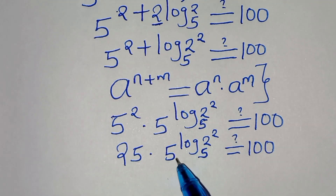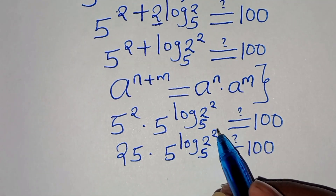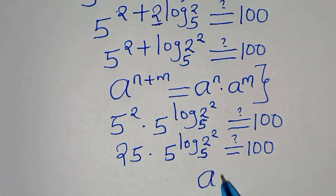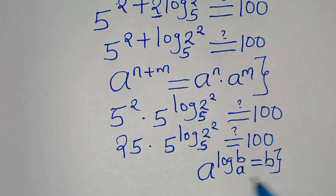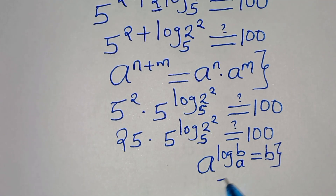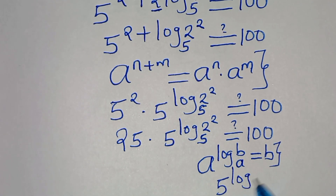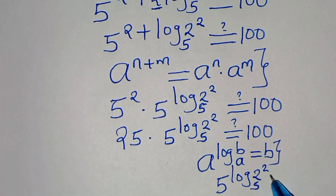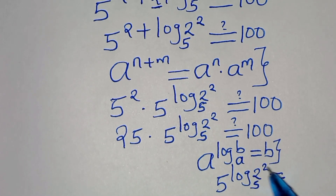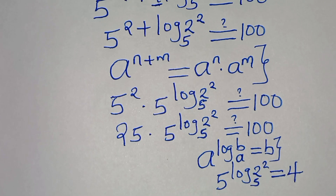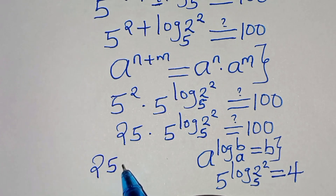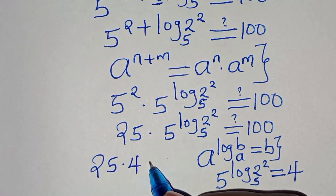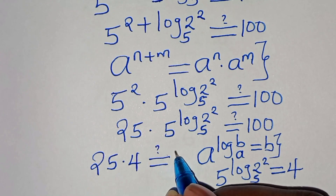Now 5 to the power of log base 5 of 2 squared is in the form a to the power of log base a of b, which equals b. Applying this logarithm property, 5 to the power of log base 5 of 2 squared equals 2 squared, which is 4. So substituting back, we have 25 multiplied by 4, which should equal 100.